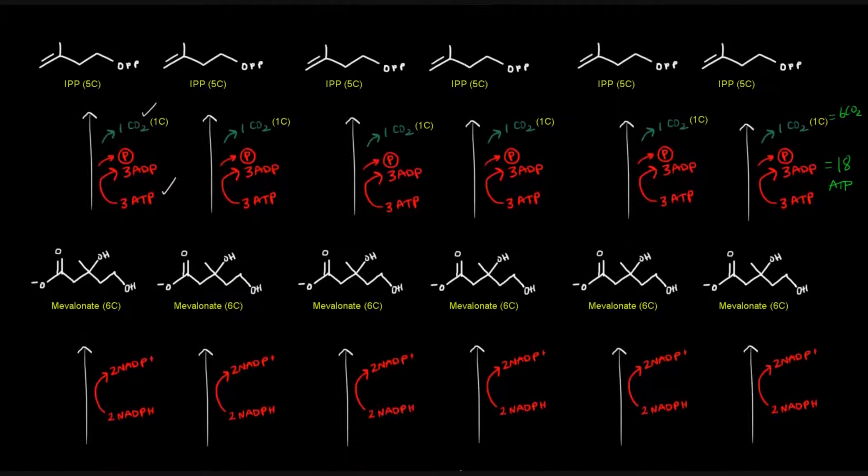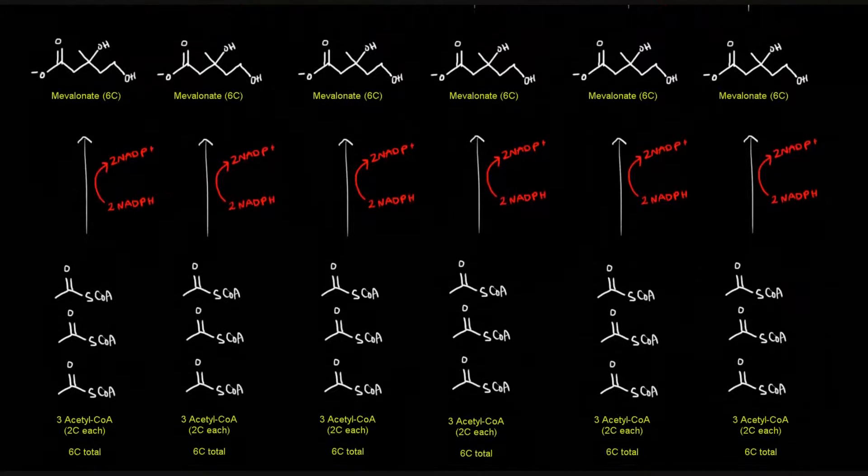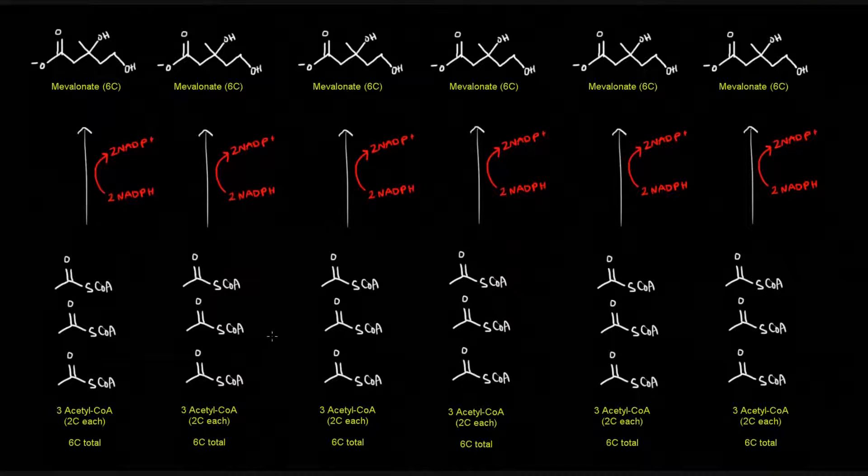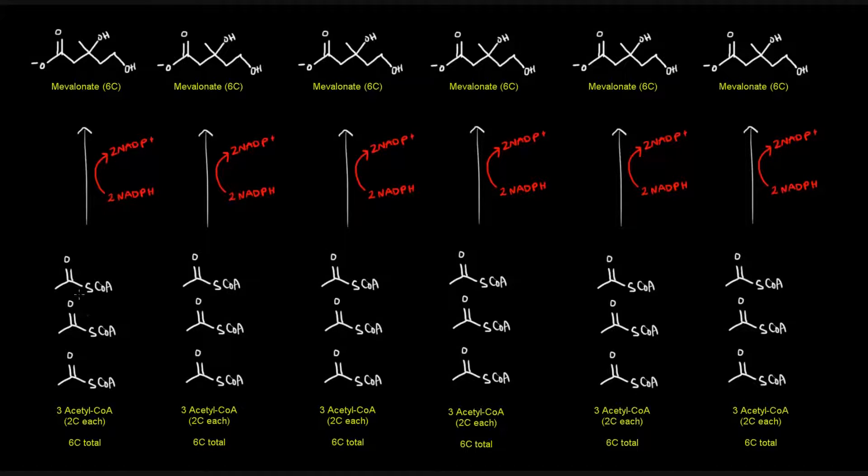And here we have six carbon dioxides that leave produced. How do we get these mevalonates? Each mevalonate came from a reaction of putting together three acetyl-CoAs. Putting together these three two-carbon molecules to give one mevalonate required two NADPHs. If that's going to happen six times to produce these mevalonates, that's six times two NADPHs, that is 12 NADPHs used. And how many acetyl-CoAs do we have here? We have three for each of these reactions. There are six total reactions. Three times six is 18 acetyl-CoAs.